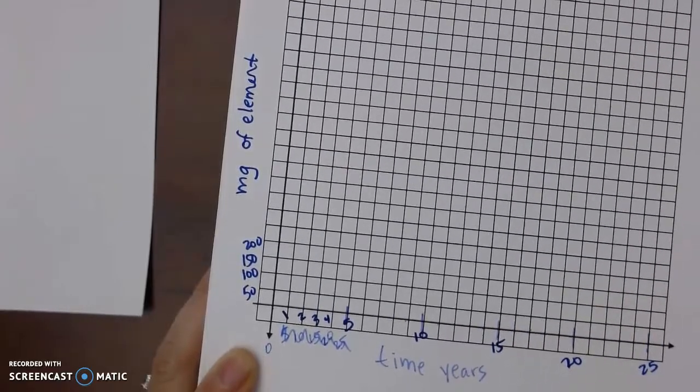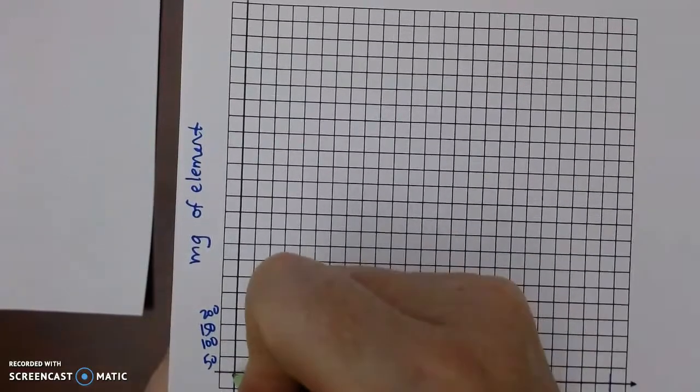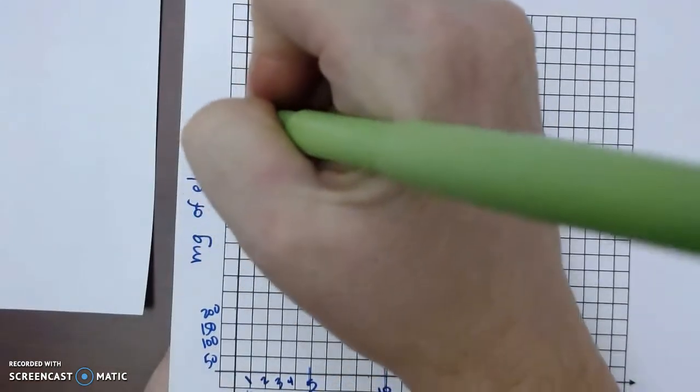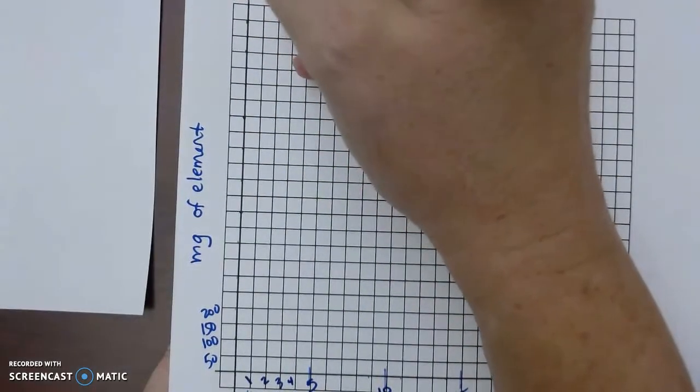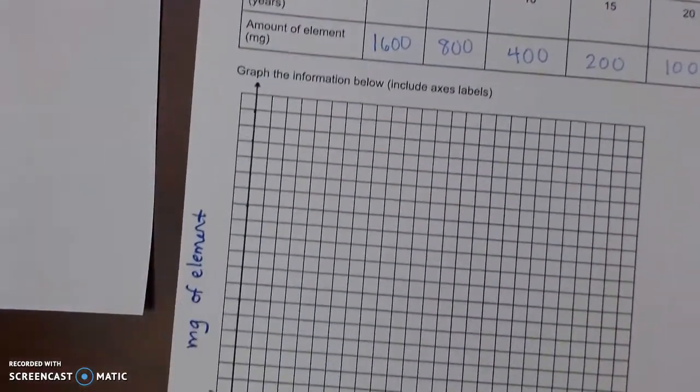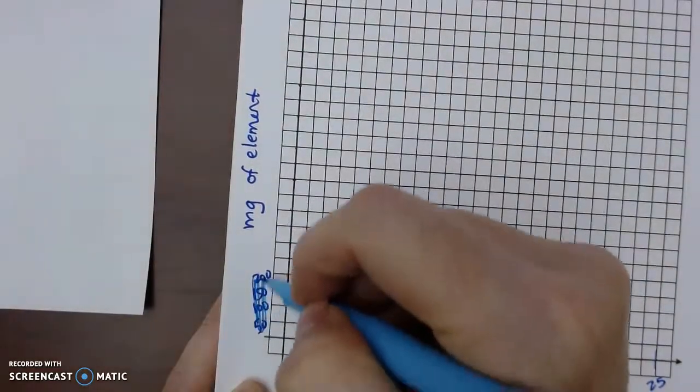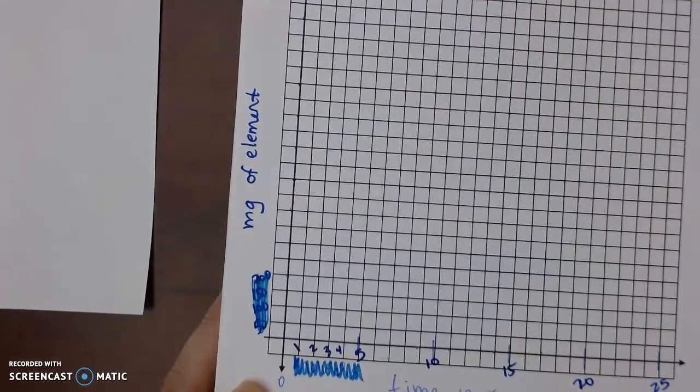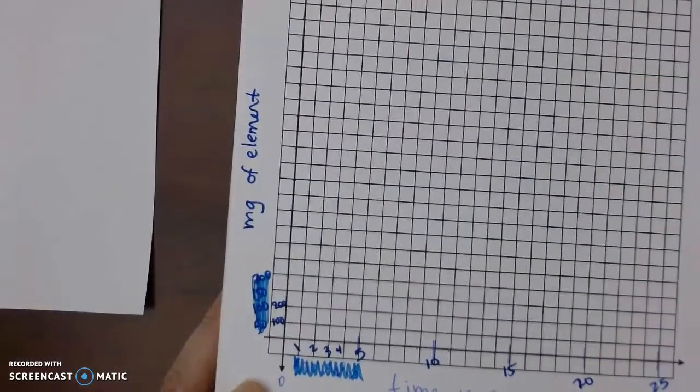What you can't do is just skip to the number that you want. I'm gonna plot these together. So we had 0, 1600, so 1, 2, 3, 4, 5, 6, 7, 8, 9, 10, 11, and I'm gonna be off the graph, 12, 13, 14. I'm gonna be way up here. So judging on that, we might want to adjust this.